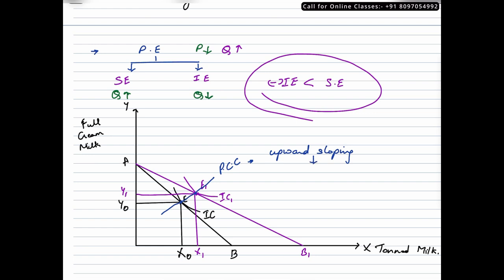And generally you would see it in cases of inferior goods. One thing we have to remember that if at all the income effect is able to outweigh the substitution effect, in that case, the PCC curve would be a normal downward sloping PCC curve.